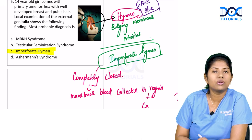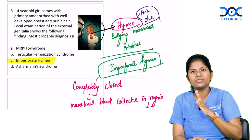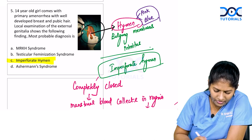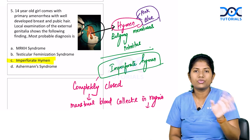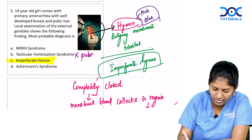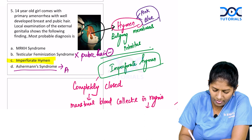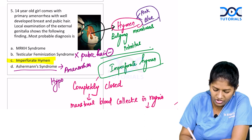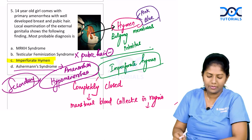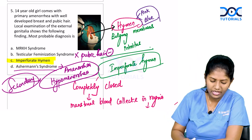Why is this not MRKH? In MRKH (Mullerian agenesis), the uterus is absent, so there is no hematocolpos and no bulging membrane. Why is this not testicular feminization syndrome (TFS)? Because in TFS, pubic hair is absent. Why is this not Asherman's syndrome? Because Asherman's presents with secondary amenorrhea or secondary hypomenorrhea, not primary amenorrhea as in this case.